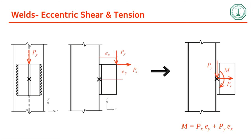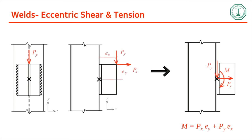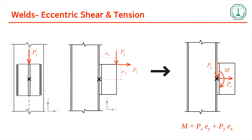Now we move to welds subjected to eccentric shear and tension. In this figure, a WT section is welded onto the flange of a W-shape. The shear P acts eccentrically at distance ex from the centroid, and a tension acts at distance ey from the centroid. You transfer Py and Px to the centroid and obtain a resulting moment.